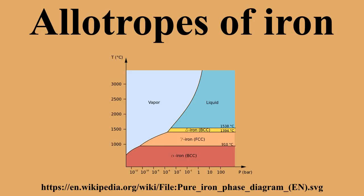Alpha iron: At 912 degrees Celsius, the crystal structure again becomes BCC as alpha iron is formed. The substance assumes a paramagnetic property. Alpha iron can dissolve only a small concentration of carbon. At 770 degrees Celsius, the Curie point, the iron is a fairly soft metal and becomes ferromagnetic. As the iron passes through the Curie temperature there is no change in crystalline structure, but there is a change in the magnetic properties as the magnetic domains become aligned. This is the stable form of iron at room temperature.